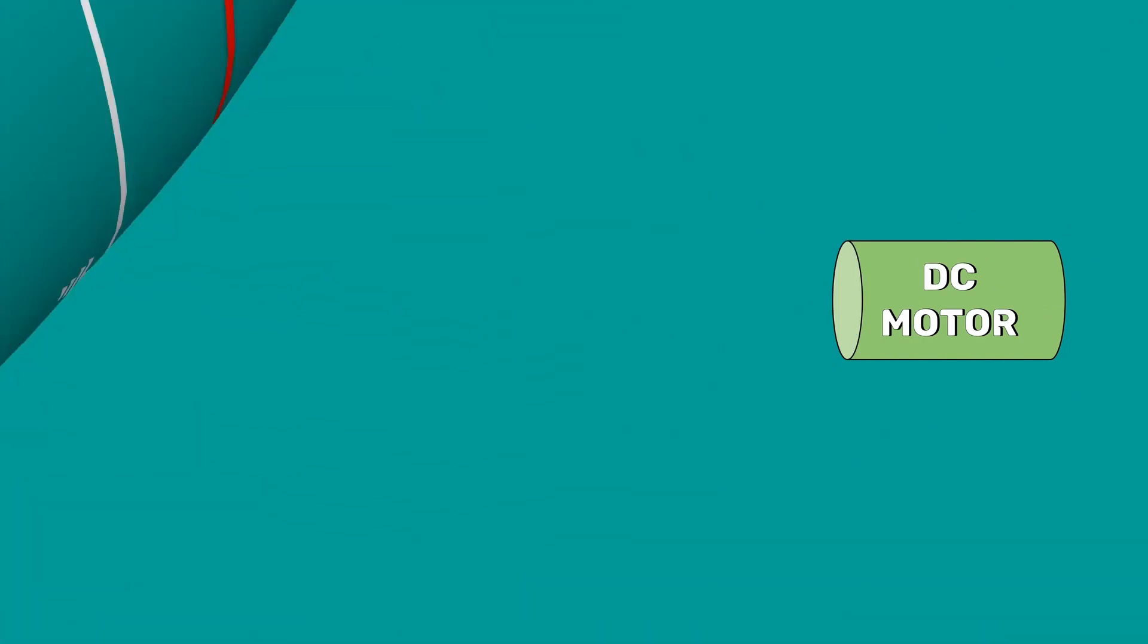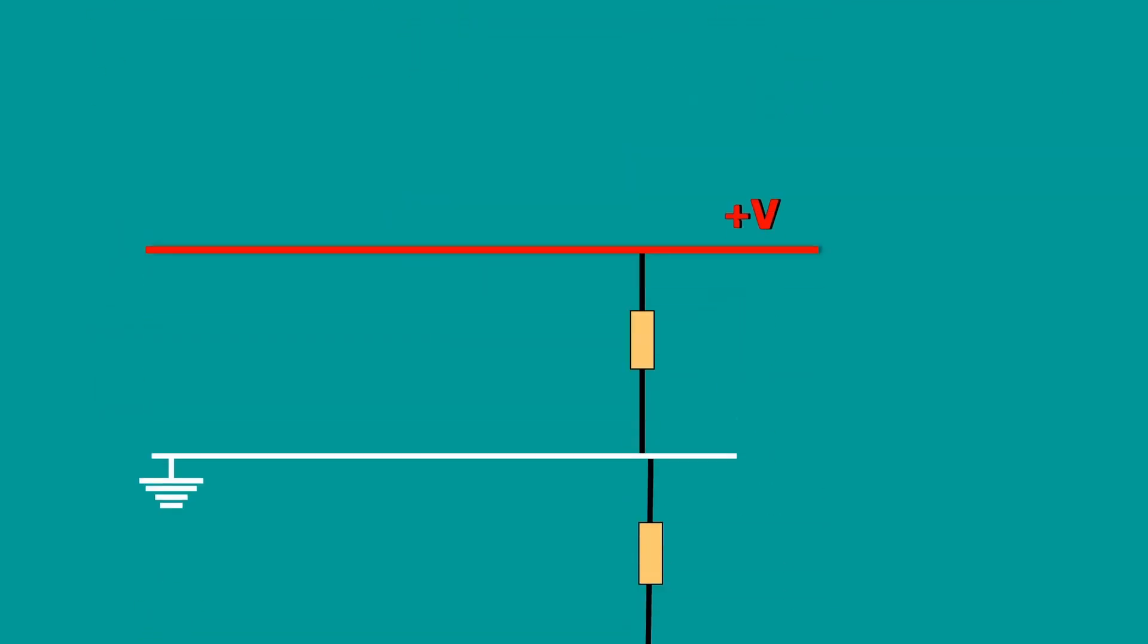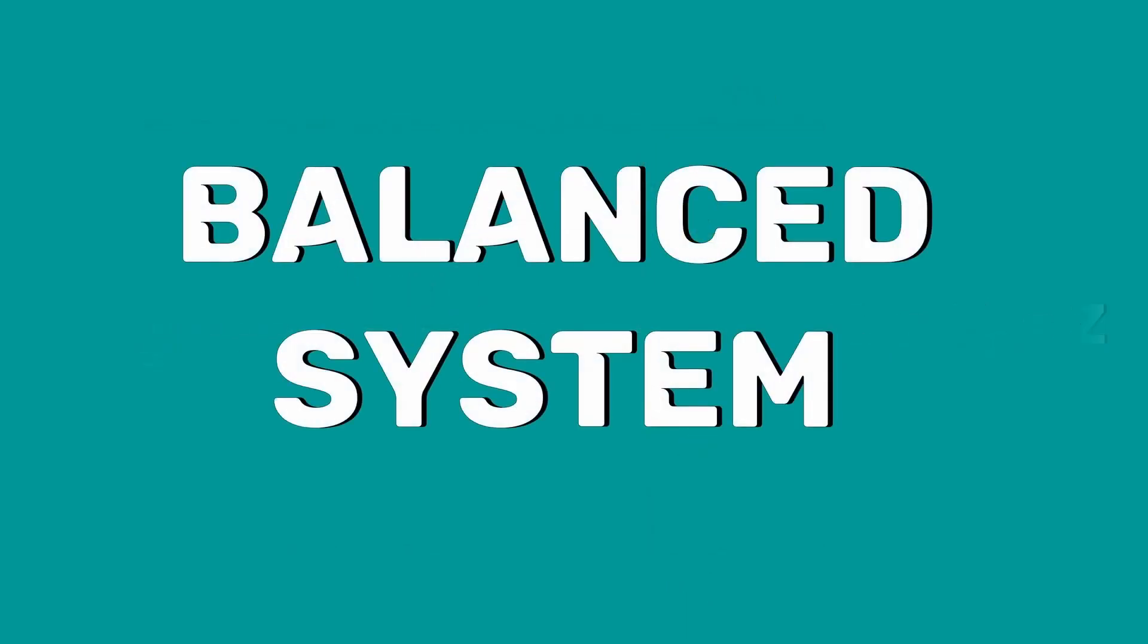The voltage between the positive and the negative conductor is twice the voltage between the outer and the neutral. Motor loads that require high voltage are connected between the positive and negative conductors, while lighting loads which require less voltage are connected between any one outer and the neutral. The current in the neutral wire will depend upon the loads applied to the two sides. If the load applied to both sides of the neutral are equal, then the current in the neutral wire will be zero. This is called a balanced system.